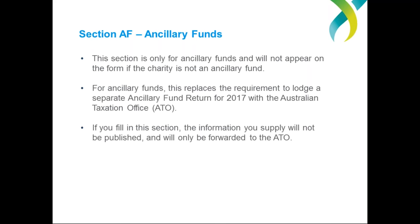Section AF is the next part of the 2017 Annual Information Statement, but this section deals with ancillary funds and is not applicable for the vast majority of charities completing the AIS. If you do need to fill in this section, our AIS guide contains extensive support to help. Completing this section replaces the requirement to lodge a separate Australian Taxation Office ancillary fund return for 2017. Any information a charity provides for this section will not be published, but will only be forwarded to the ATO.